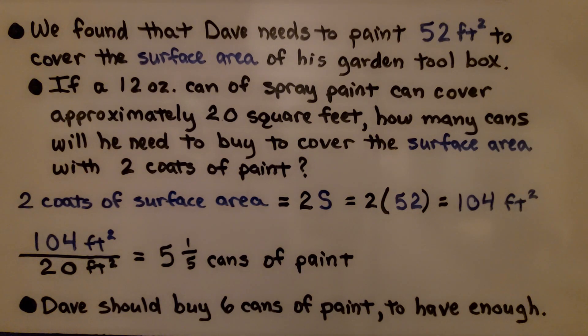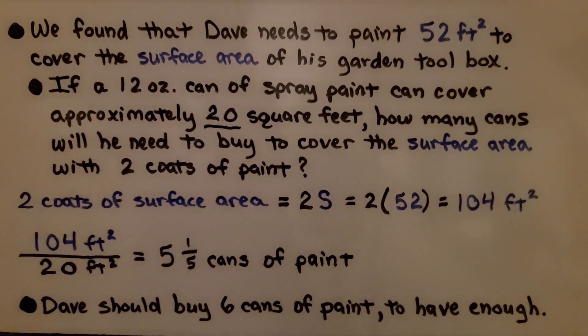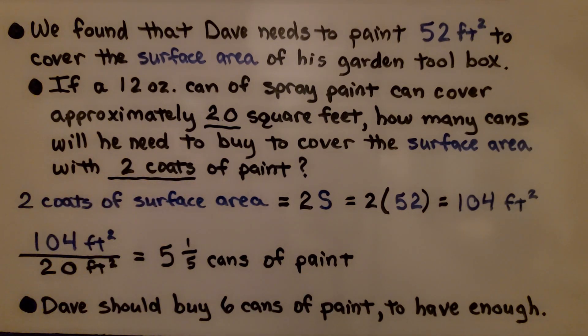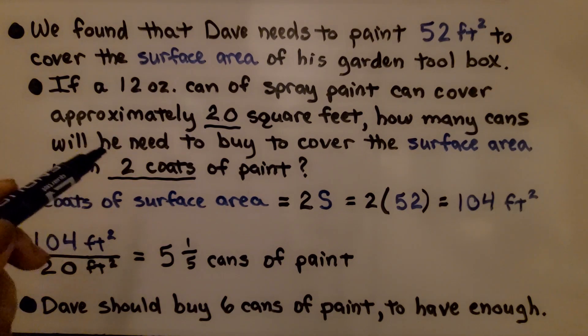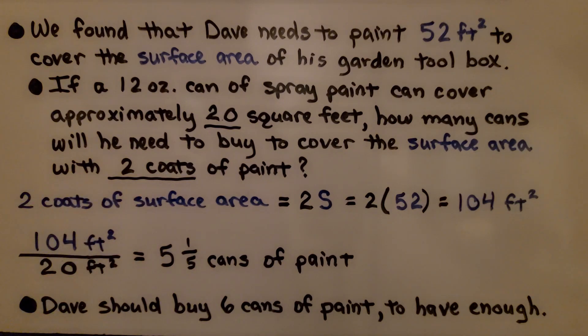If a 12 ounce can of spray paint can cover approximately 20 square feet, how many cans will he need to buy to cover the surface area with 2 coats of paint? One coat of paint might be a little thin, the box may show through, so he wants to do 2 coats of paint.